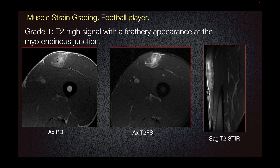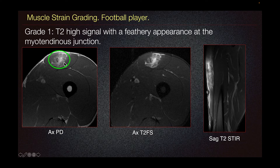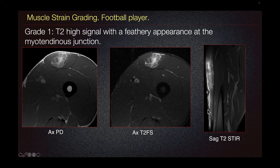This makes muscle strain grading for rectus femoris unique. For example, in this patient — a football player — grade 1 strain is demonstrated by T2 high signal with a feathery appearance at the myotendinous junction. This low-grade or grade 1 strain predominantly involves the inner muscle belly around the central aponeurosis. On axial T2 fat sat imaging, we can see this feathery appearance with no discontinuity of the fibers. The sagittal T2 demonstrates the craniocaudal extension.